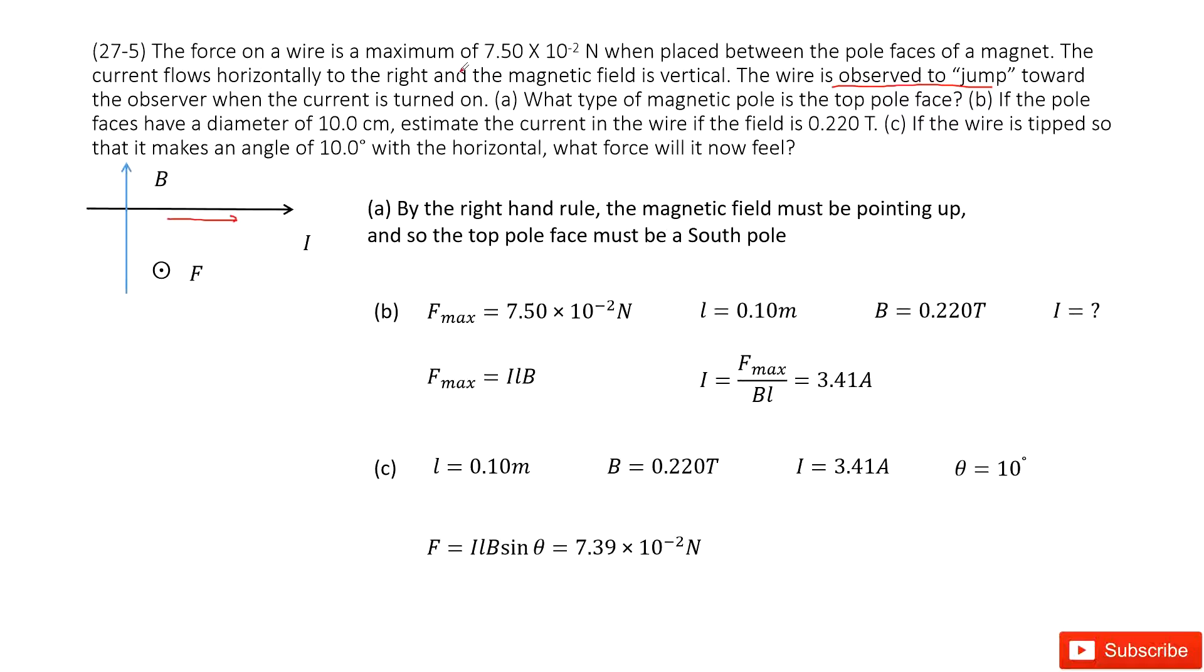When you rotate your four fingers, the four fingers pointing up. This is the magnetic field direction pointing up. So this tells us the magnetic field must be pointing up, so the top pole face must be a south pole.